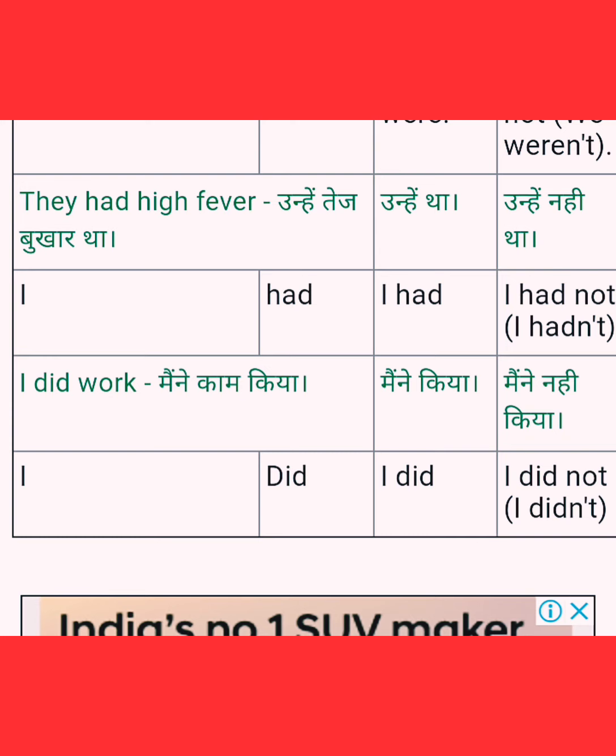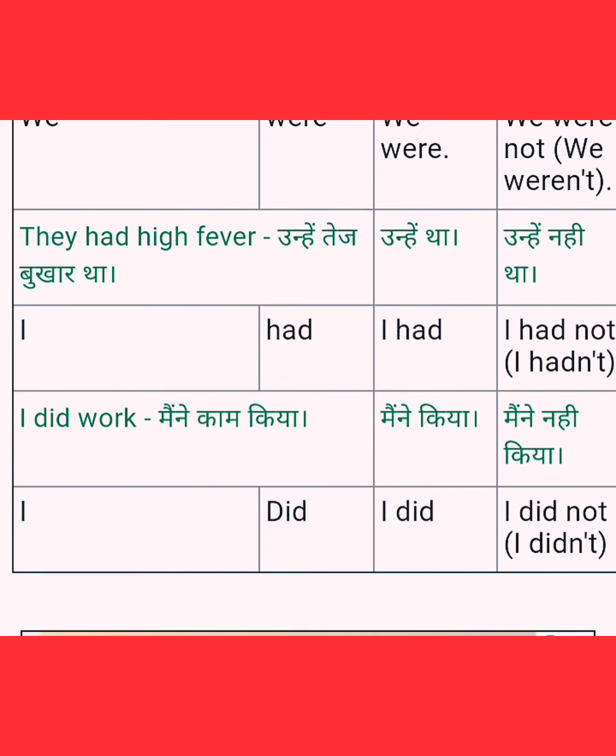Next: 'They had high fever' — unhye tez bukhar tha. 'They' means unhye, and 'had' means tha. Positive short answer: 'they had', 'I had'. Negative: 'they hadn't' — unhye nahi tha. 'I hadn't' — mujhe nahi tha. Also: 'they had not' and 'I had not'.